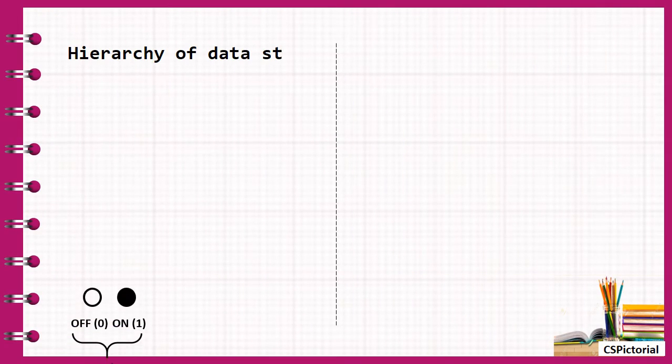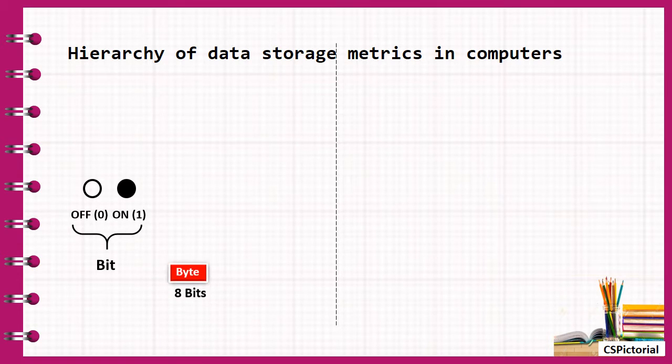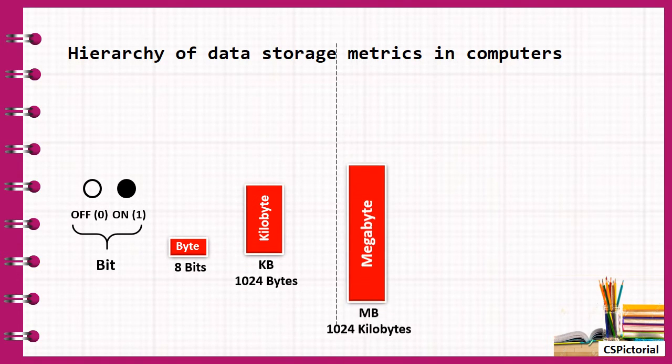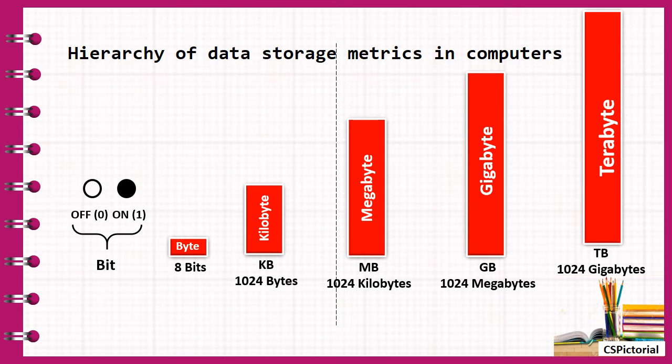The hierarchy of metrics grows as bit, byte, kilobyte, megabyte, gigabyte, terabyte and so on.